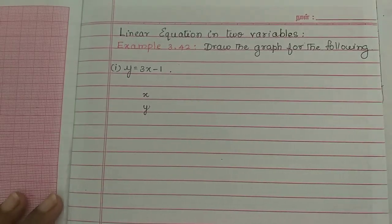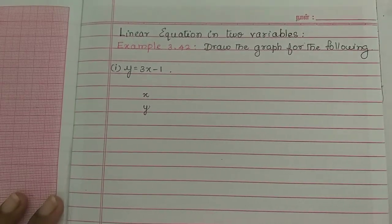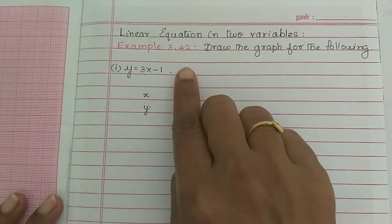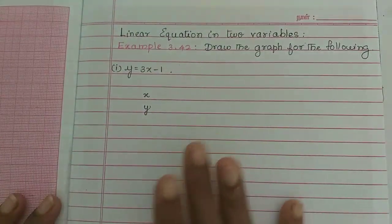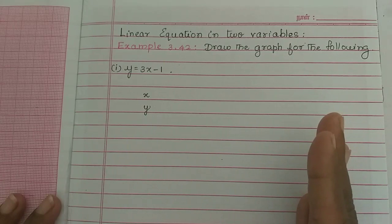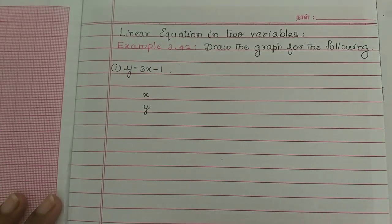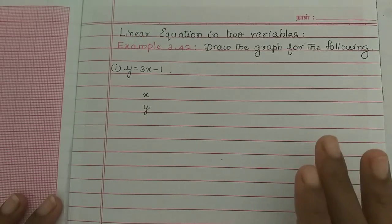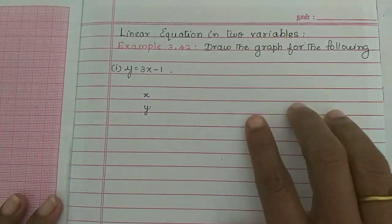Hi students! In this video, we will see the linear equation in two variables. In example 3.42, we will come directly to the sum which we will explain. If you plot the graph in the last year, you will have an experience. Now, we will see the linear equation in two variables.